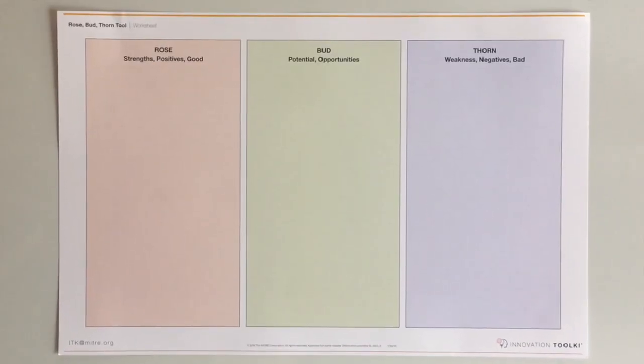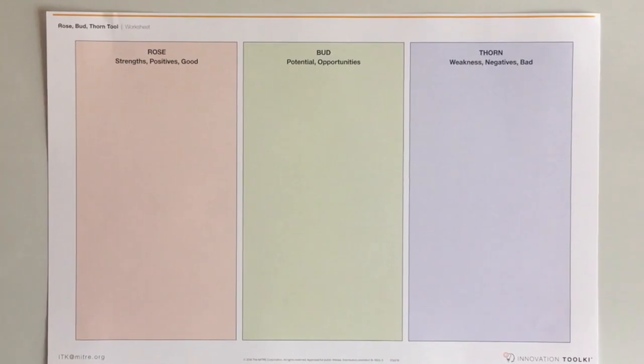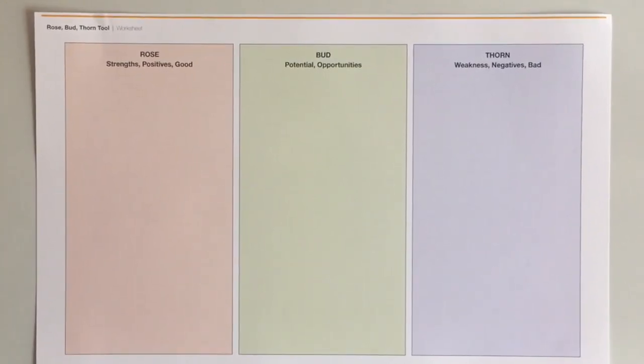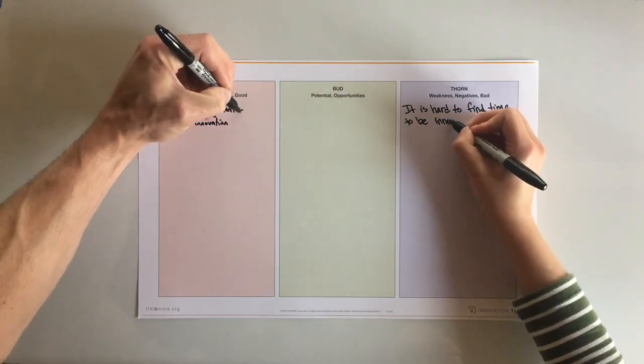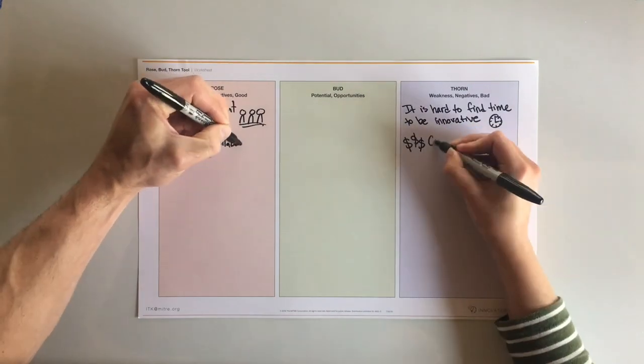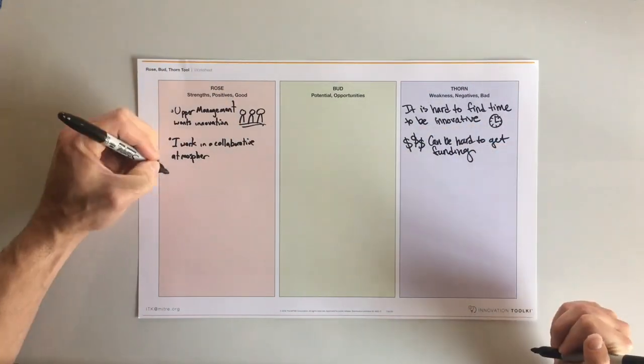This is the Rose Bud Thorn tool, a simple framework for conducting an analysis of the positive, potential, or negative aspects of a system, product, or process. Use this tool to quickly clarify different facets of the challenge, give all contributors a voice, and promote constructive discussions.